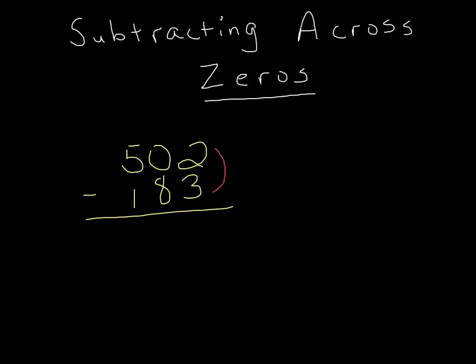So naturally we know from learning regrouping that you go over to the tens place. But there's a problem when I look at this tens place. When I look at the tens place, I see a zero. And typically you would take from the tens and give to the ones place, but there's nothing I can give. That's zero in the tens place. So I actually have to, in this problem, go over two places to the hundreds place.